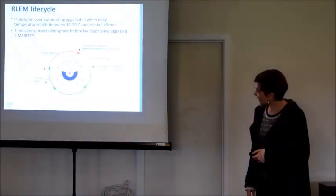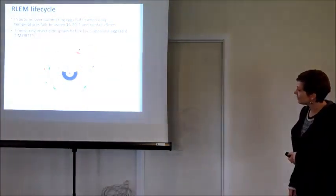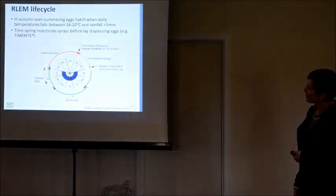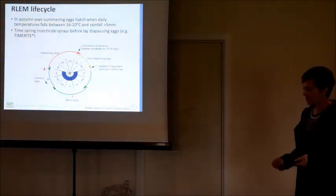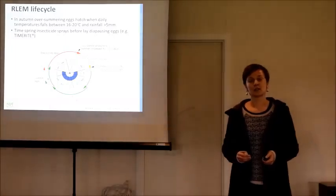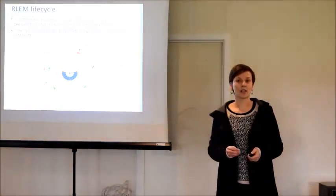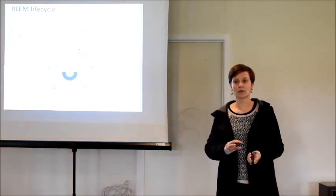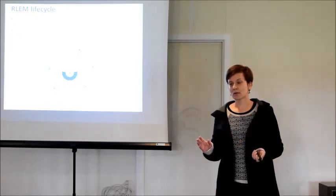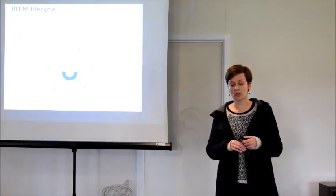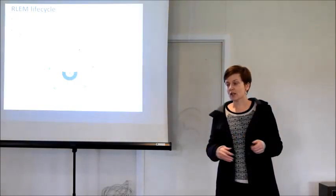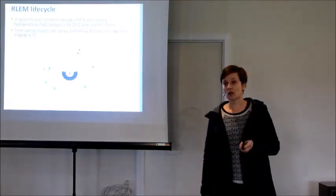So this is the life cycle of the red-legged earth mite. We're sitting about here now. What's happened over summer is that these species can produce these really resistant, over-summering and diapausing eggs that have sat around in the top soil surface and in the trash throughout that summer period, and are really good at avoiding drying out and not being killed during really hot summer conditions.